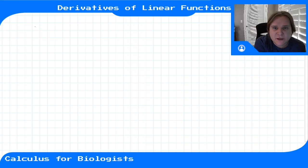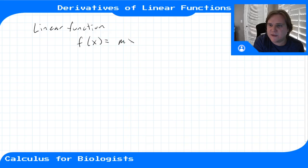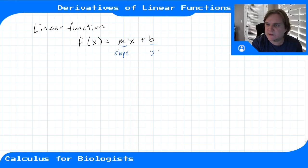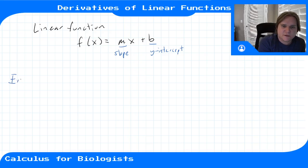Let's start with the linear function. A linear function is anything of the form f(x) = mx + b, where m is the slope and b is the y-intercept. Let's do an example: let's do 2x + 1.